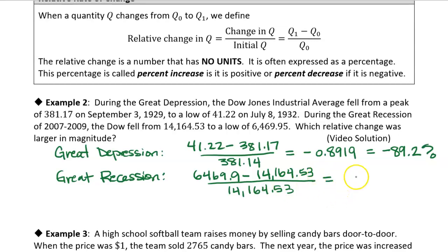So I'm going to put that into my calculator, and what do I get? We get minus 0.5432, which as a percentage is a negative 54.3%. All right. So during the Great Recession, the Dow lost 54.3% of its initial value.